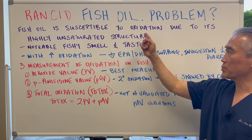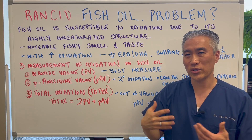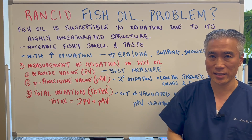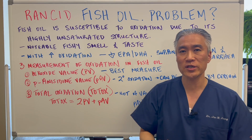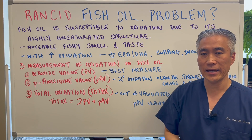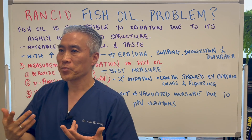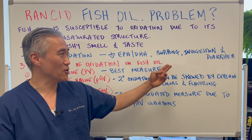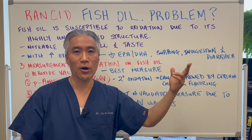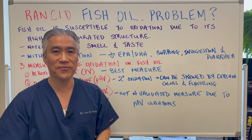Fish oil is susceptible to oxidation due to its highly unsaturated structure. When you have a lot of oxidation of the fish oil, you're going to get a fishy smell and taste. With increased oxidation, you'll have a decrease in the active ingredient, which is EPA and DHA. Also with oxidation, if you ingest it, you'll have indigestion, burping, and diarrhea. Interestingly, these three symptoms are also related to issues with the gallbladder, where you can't digest fats appropriately.